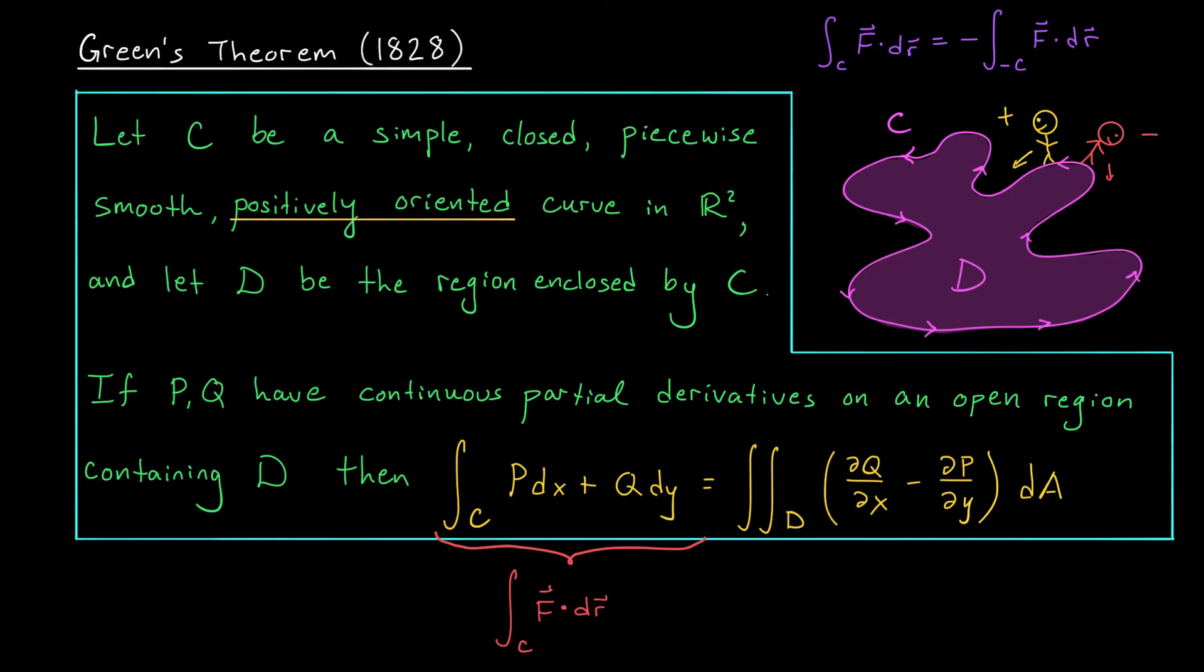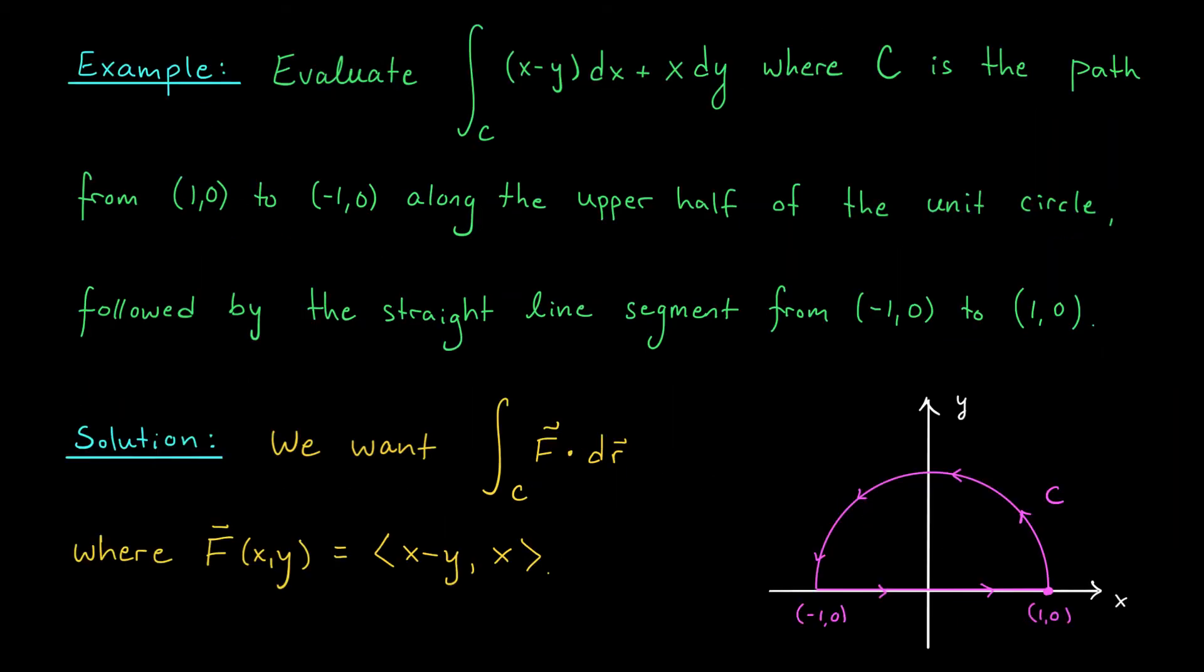Green's theorem says the same thing. If the field is conservative, then partial Q by partial X is equal to partial P by partial Y. That's our component test. So here we're integrating the zero function. Our line integral, according to Green's theorem, also evaluates to zero. Okay, let's check out an example.